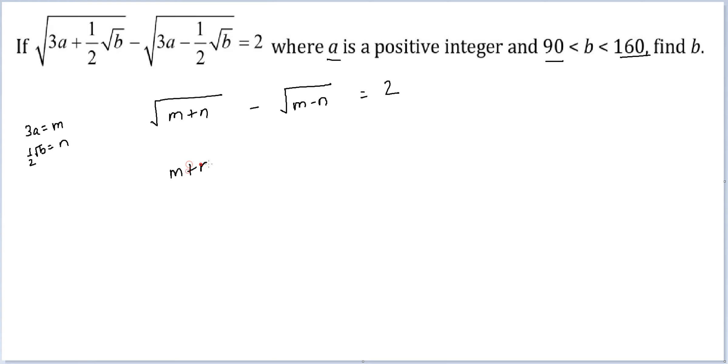Squaring both sides here I will get m + n plus m - n minus 2 times √(m² - n²), and this is equal to 4.